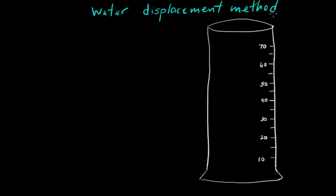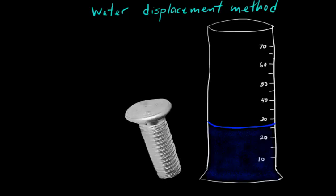And what this means is you're going to move water out of the way. Here's an example of that. I have this bolt here, and I want to find the volume of the bolt.